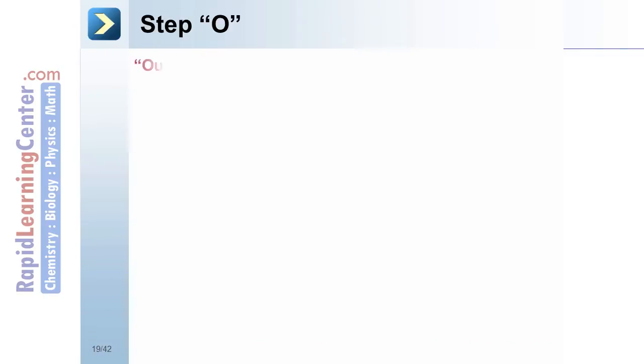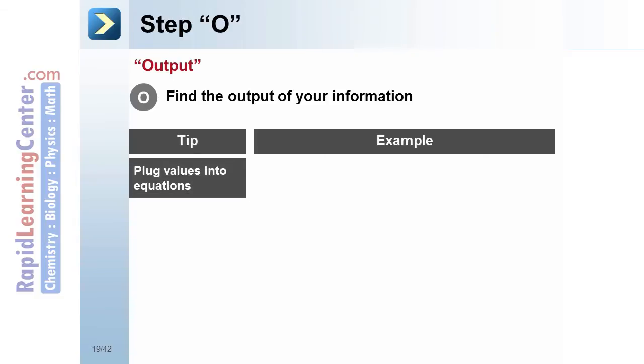Step O, output. Find the output or answer from your solution. For example, if you're plugging or substituting in values into your equation, you can arrive at an answer for your unknown.